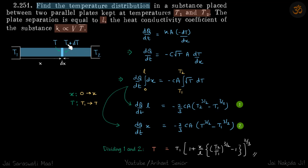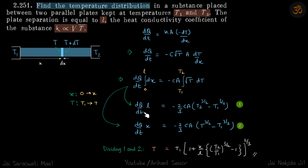The change in temperature is T minus (T plus dT), which gives minus dT. We then put in the limits: for the whole rod, x from 0 to L and temperature from T1 to T2, and we get this resulting term.